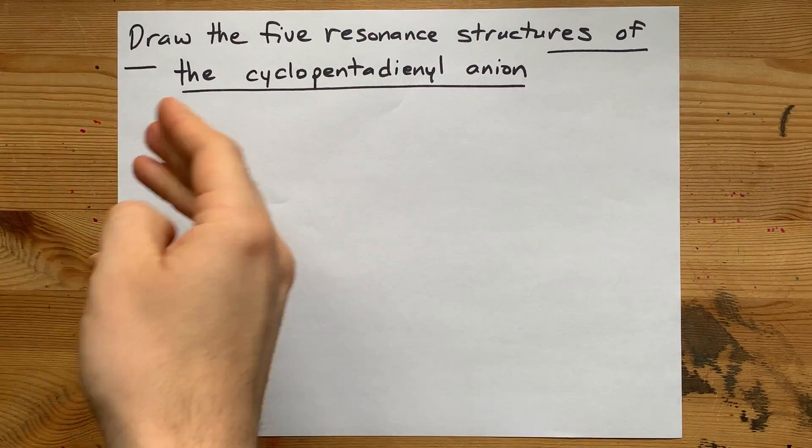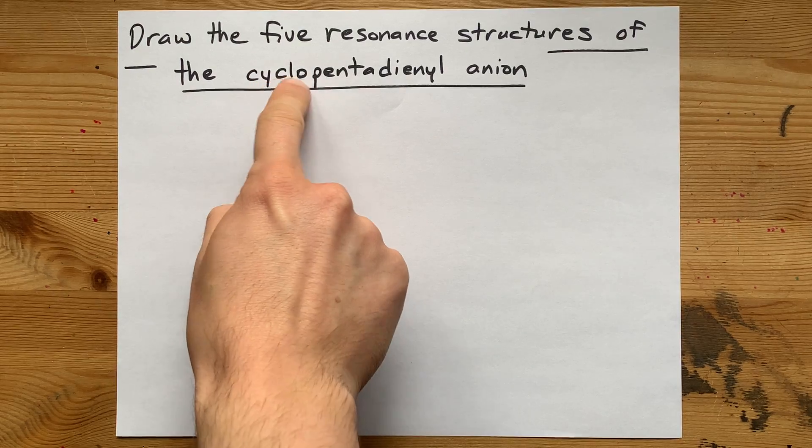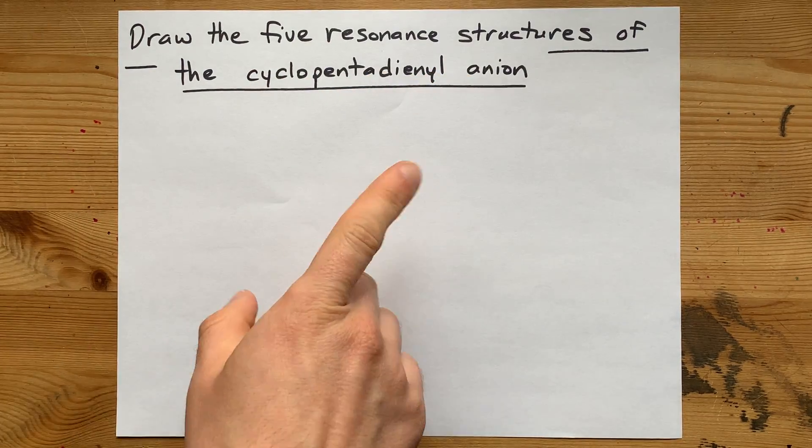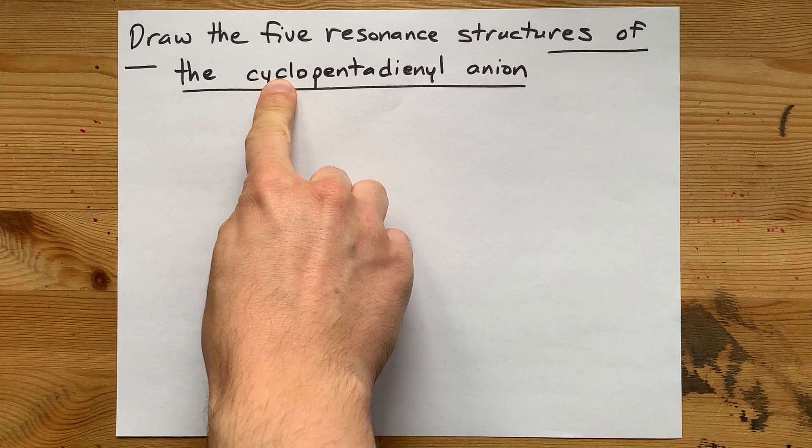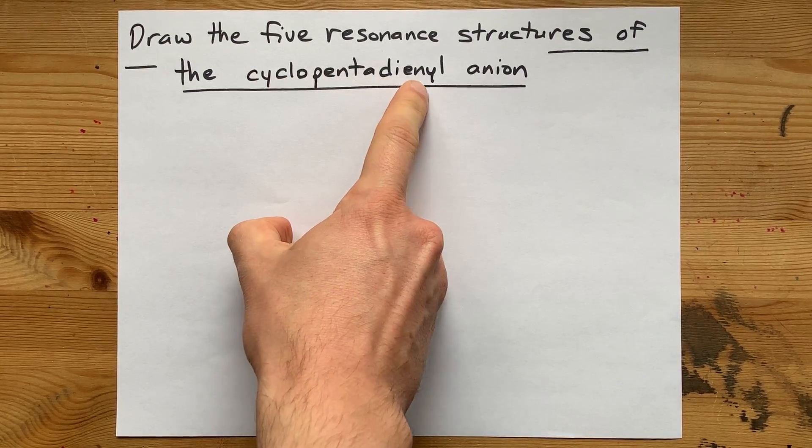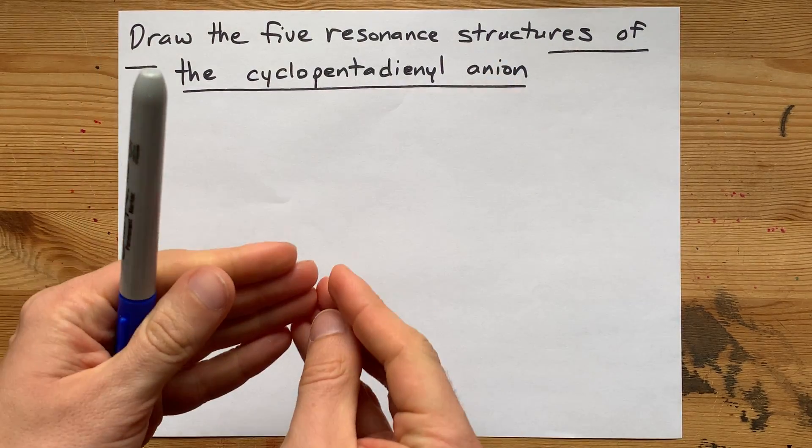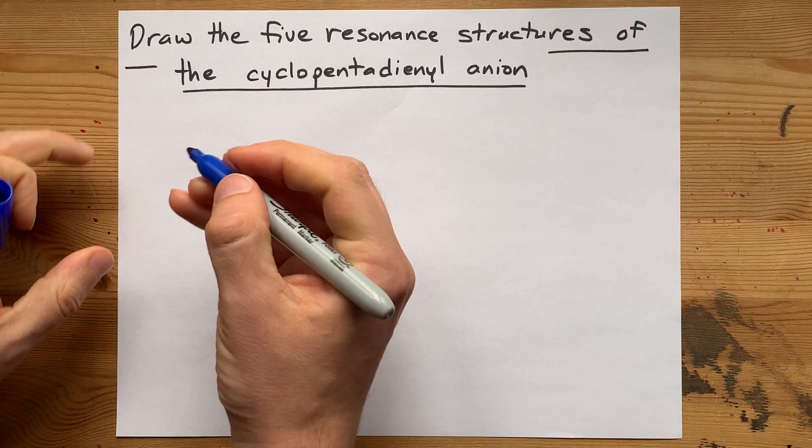I've seen this question now that I have to do it for you. Five resonance structures for the cyclopentadienyl anion. This is a ring of five carbons with two double bonds amongst it. The anion is for an extra electron that is attached to it.